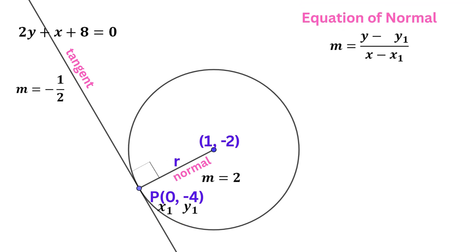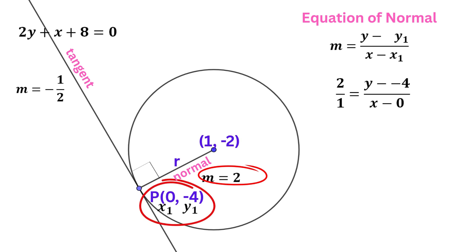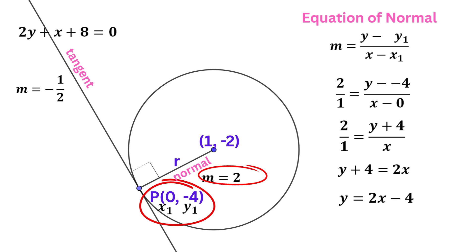Now let's find the equation of the normal. The gradient of the normal is 2, so we replace M with 2 over 1. The point is the same P, so we replace Y1 with negative 4 and X1 with 0 as we did before. We get 2 over 1 equals (Y plus 4) over X. Cross-multiplying: Y plus 4 equals 2X. So Y plus 4 equals 2X, or transposing for Y: Y equals 2X minus 4.